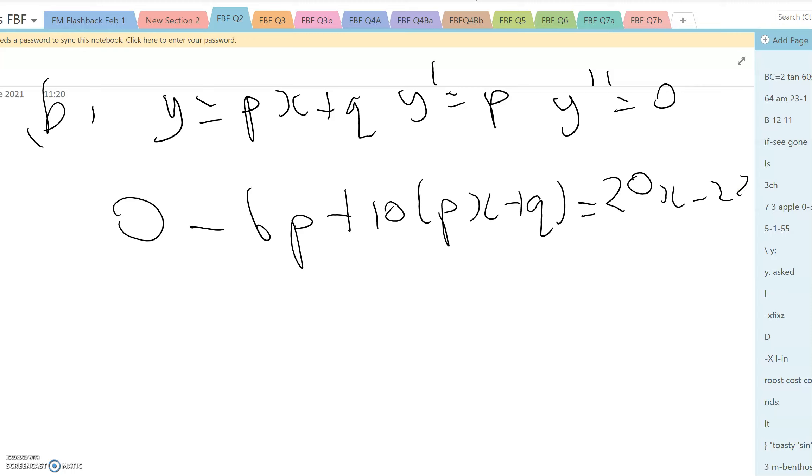The coefficient of x gives us 10p is 20 and therefore p is 2. The constant coefficient gives us minus 6p plus 10q is minus 22. And that leads us to q equals minus 1.